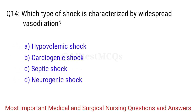Q14. Which type of shock is characterized by widespread vasodilation? The right answer is Option D: Neurogenic shock.